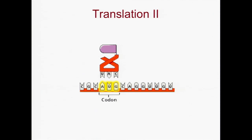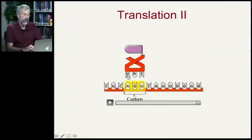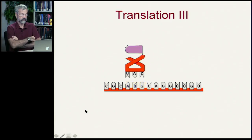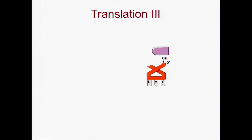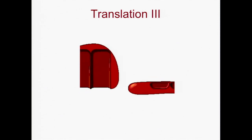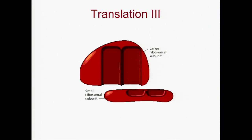So here we have the transfer RNA — the translator — because it has a sequence that looks for the codon on the messenger RNA. This one has UAC here and only delivers a certain kind of amino acid. The anticodon on the tRNA also specifies which amino acid is bound to its three-prime end. Enzymes called aminoacyl synthetases bind the carboxyl end of the amino acid to the three-prime OH of the tRNA.